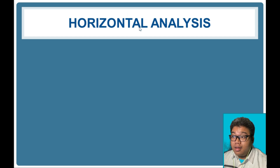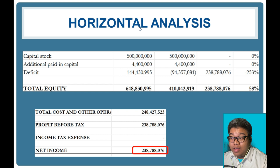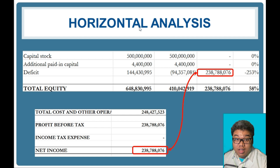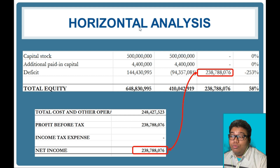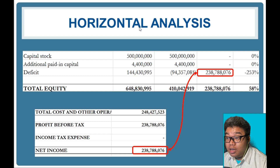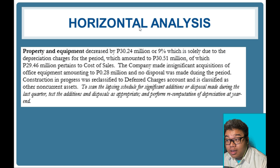It is not just the computation of percentages that matters, but also the analysis. One thing to consider: when analyzing financial statements, net income and the change in retained earnings should be the same unless there is a dividend declared. The change in retained earnings and income for the period should be equal if there are no declarations of dividends for preferred or common stockholders.